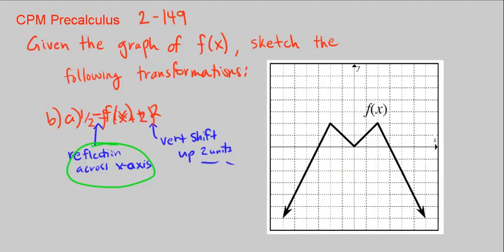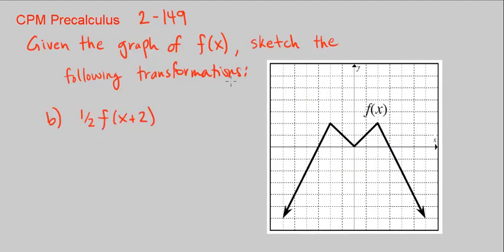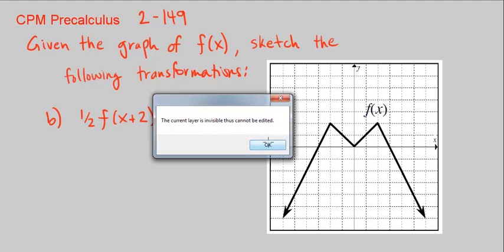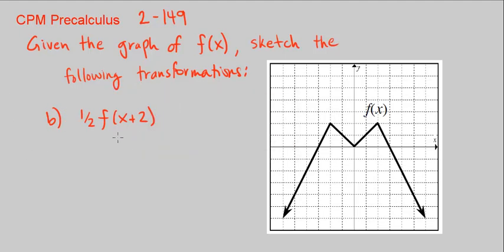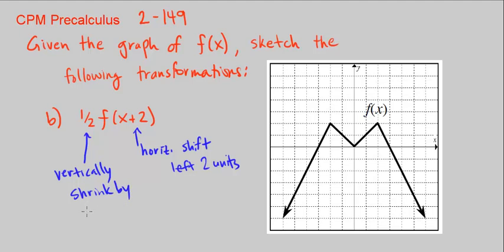Let's go on to part B. We have a different transformation taking place. Our transformation now is, first of all, inside the argument, plus two means shifted horizontally. Horizontal shift plus two means left two units. If it was negative, it would mean right. And half means we are going to vertically shrink or compress, shrink by a factor of two.